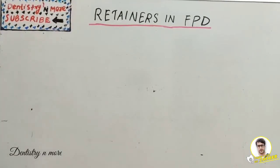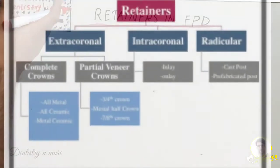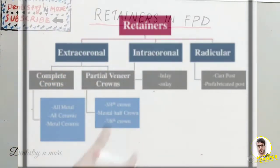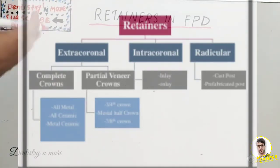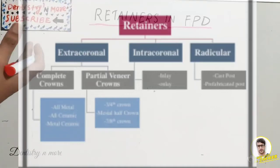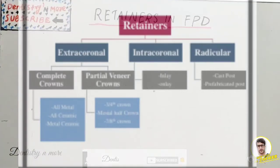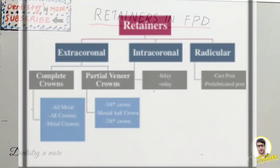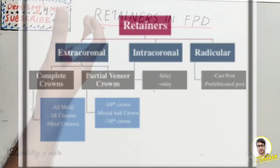The classification of retainers has two basic types based on position: extra coronal, intra coronal, and radicular. Under extra coronal we have complete crowns and partial veneer crowns — complete crowns include all metal, all ceramic, and metal ceramic combinations. Partial veneer crowns include the three-quarter crown, seven-by-eight crown, and mesial half crown. Intra coronal retainers include inlays and onlays, while radicular retainers include cast post and prefabricated post.